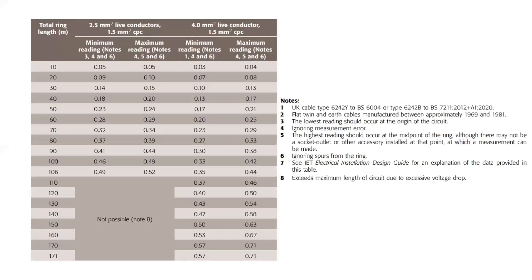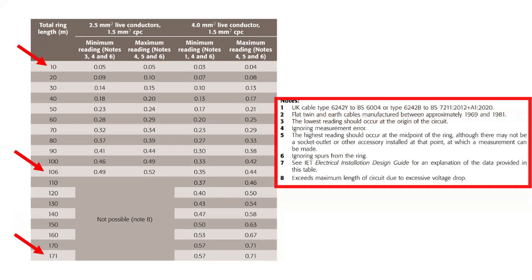You'll find the answer on page 66 and 67 of GN3, with this handy table to show the minimum and maximum resistance values for a total length of circuit, starting at 10 metres and ending at 106 metres for 2.5 and 171 metres for a 4mm ring final circuit. Please also take the time to read the notes below the table.